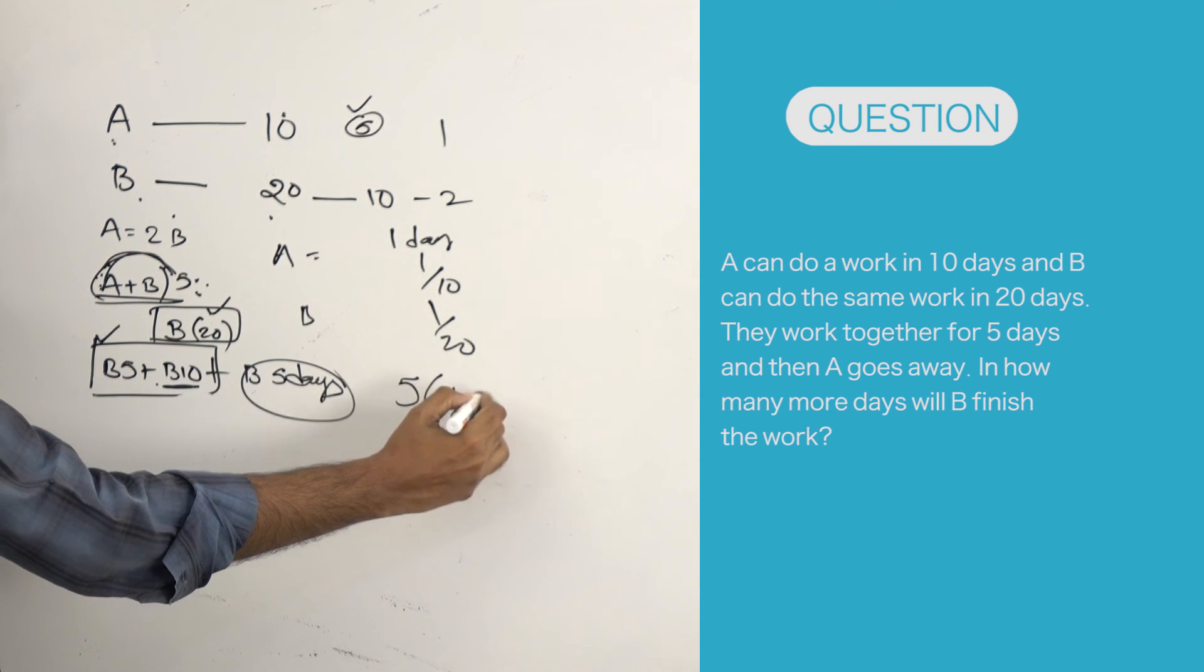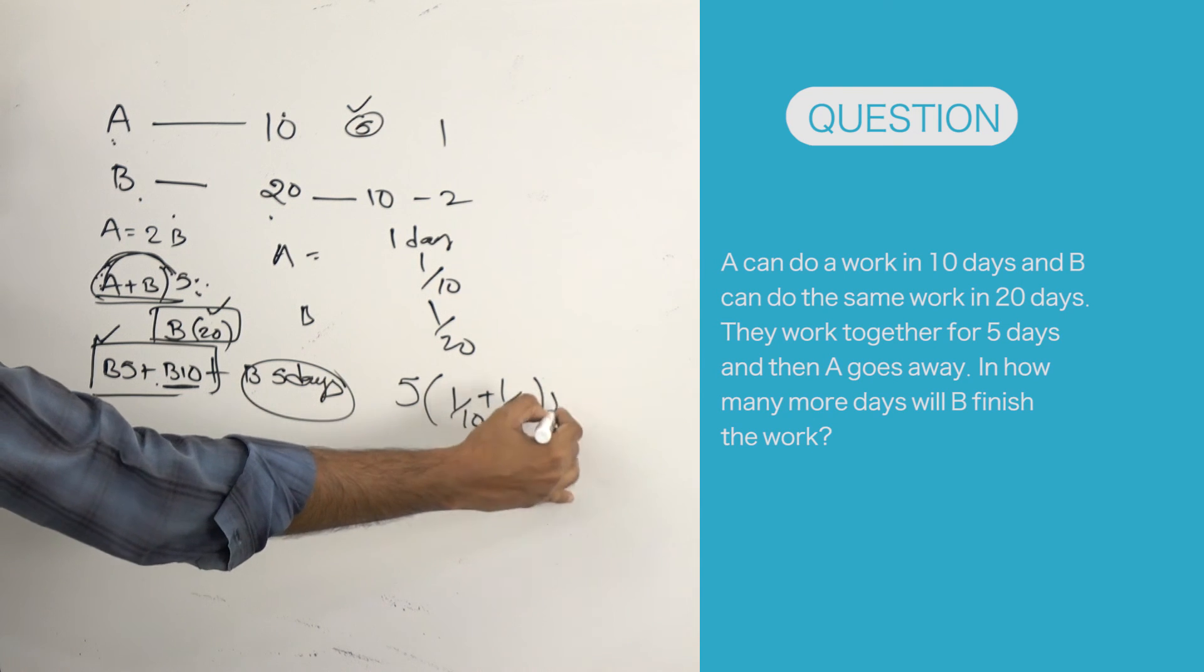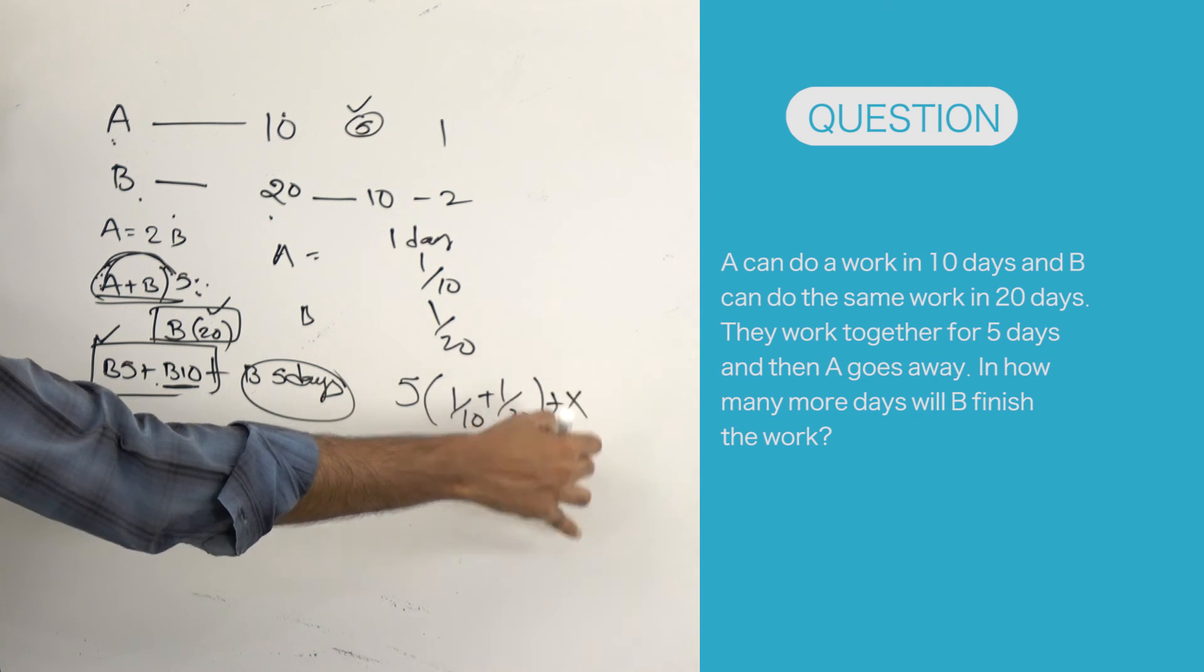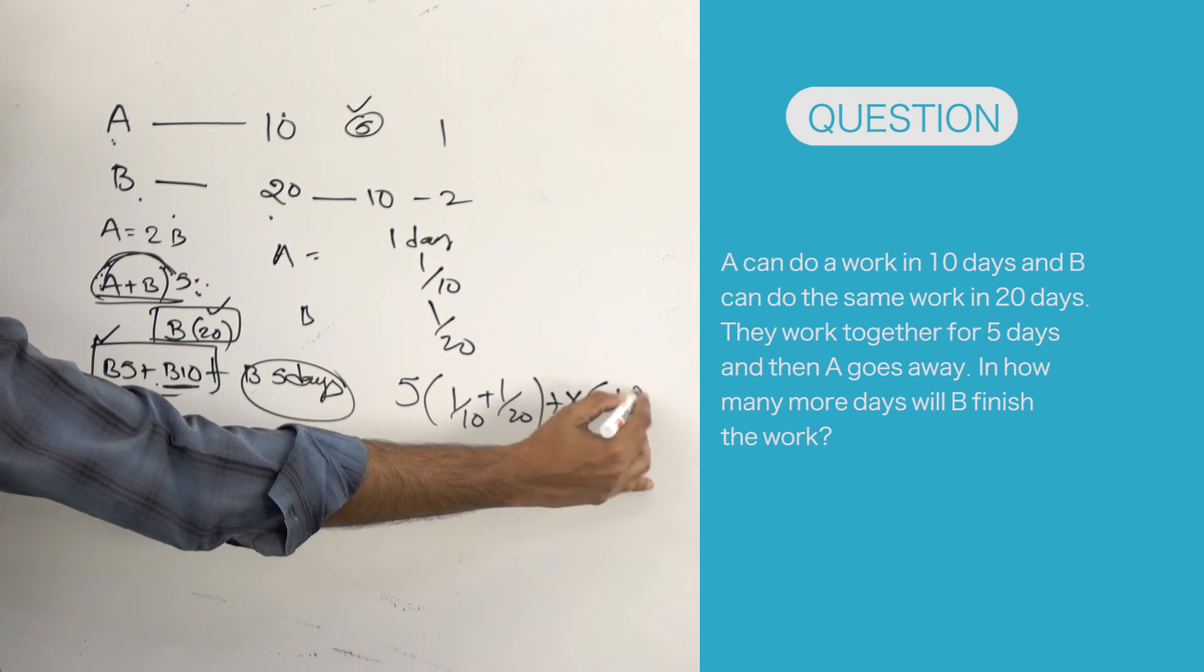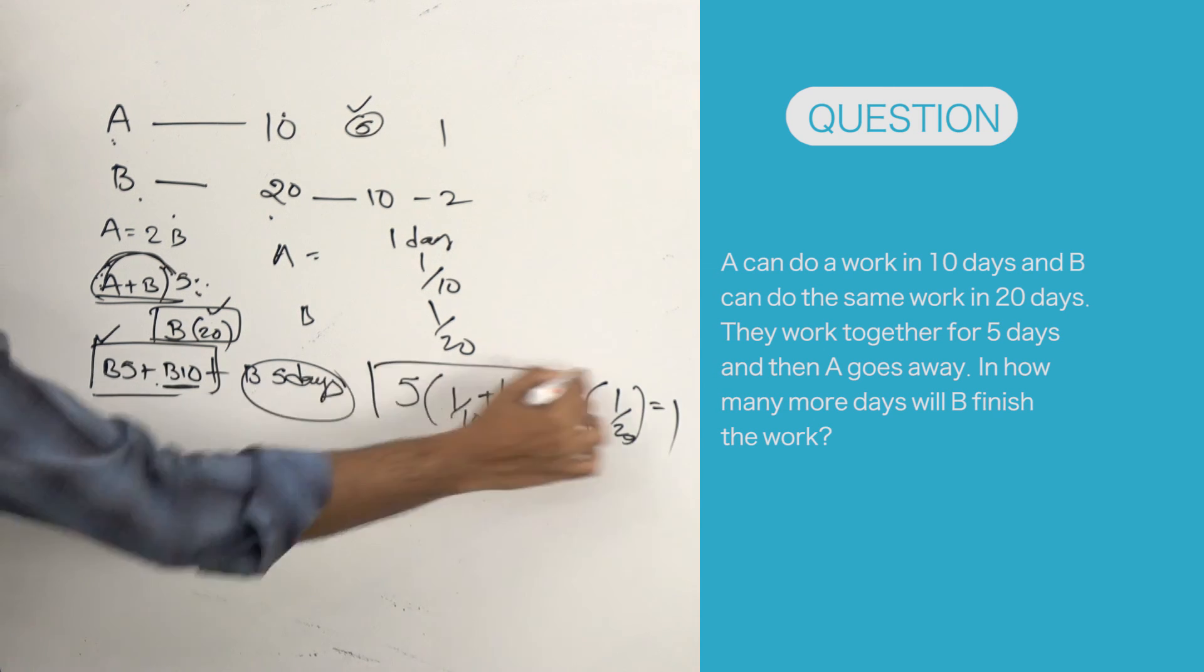A and B work together for 5 days, so 5 into 1 by 10 plus 1 by 20. We do not know for how many days B will work, so we will write x into 1 by 20 is equal to 1. After solving this, you get the answer.